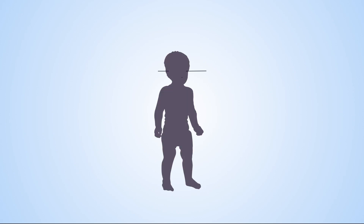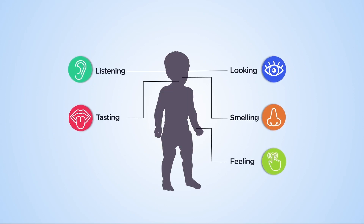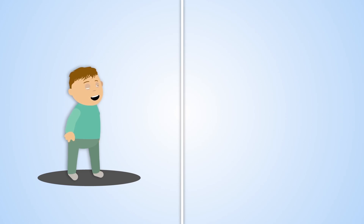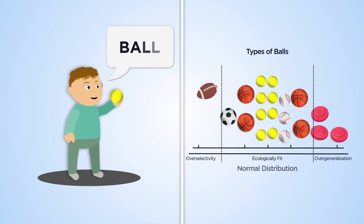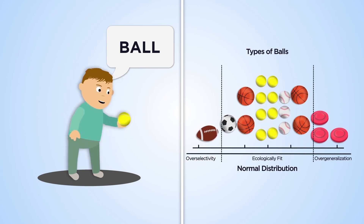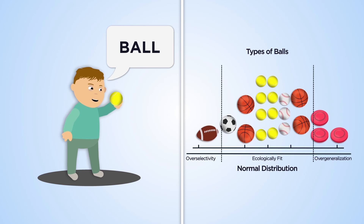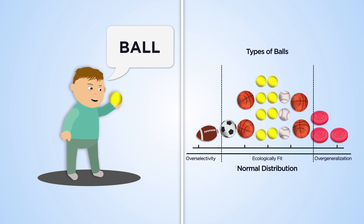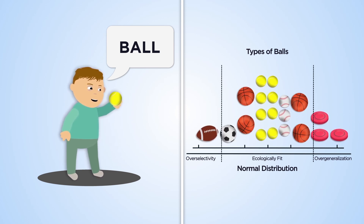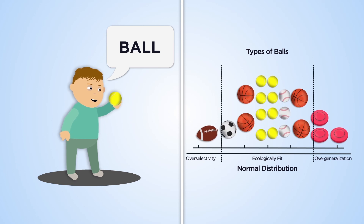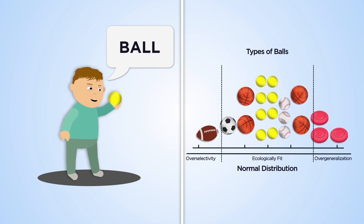Ecologically fit behaviour falls within a range of environmental control across the different exteroceptors — sight, sound, taste, touch and smell. Suppose you're taught that a spherical, handheld object is called a ball. Other similar objects come to control the response 'ball' through generalisation. Your verbal behaviour is ecologically fit, provided it's made within the context of stimuli that meet the qualifications of being both spherical and handheld.